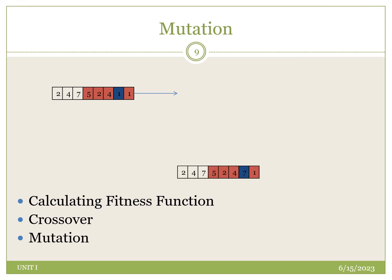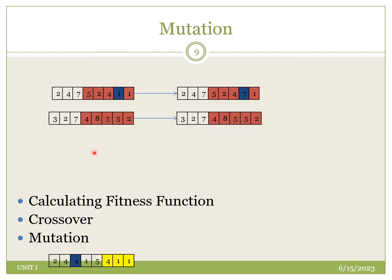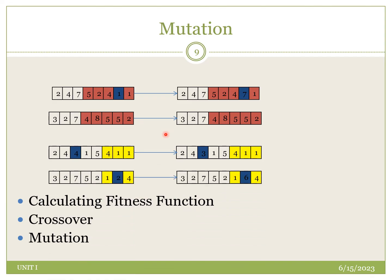Next, we perform mutation. In mutation, we are shifting or changing the positions of some queens. Here, position one is interchanged by seven. In the second case, there are no interchanges. In the third case, four is changed to the third position. And in the fourth case, second is changed to sixth position. This is again performed randomly. After performing mutations, we get four child populations, which form the new generation for the next iteration.